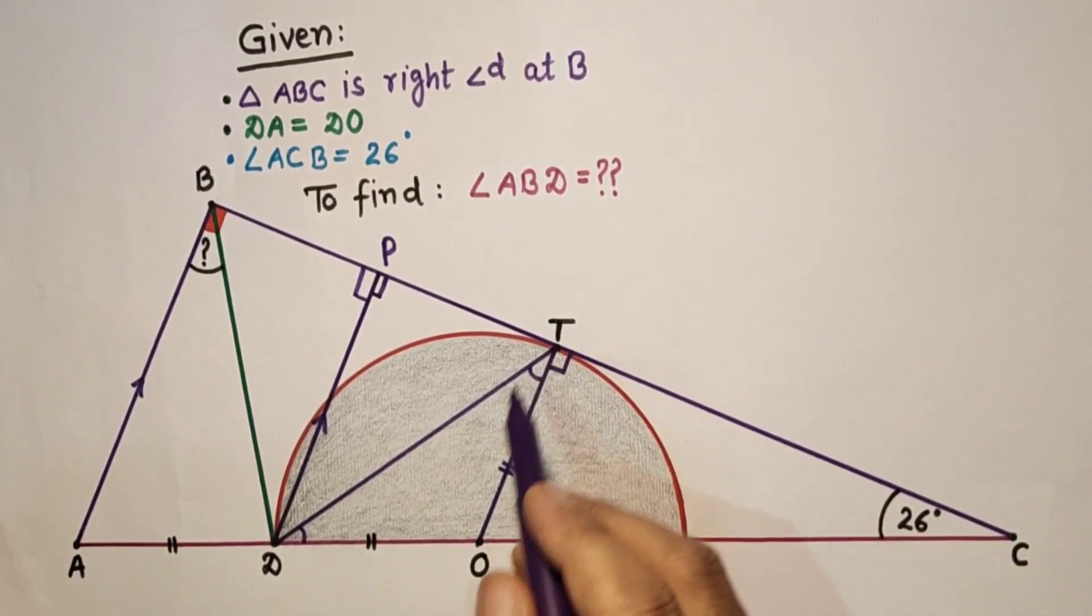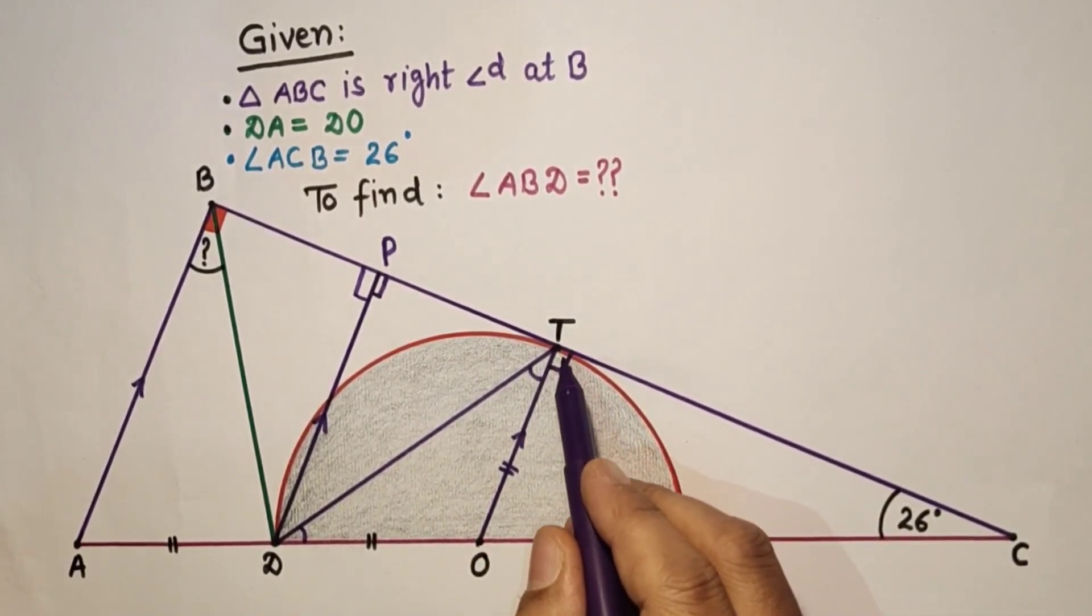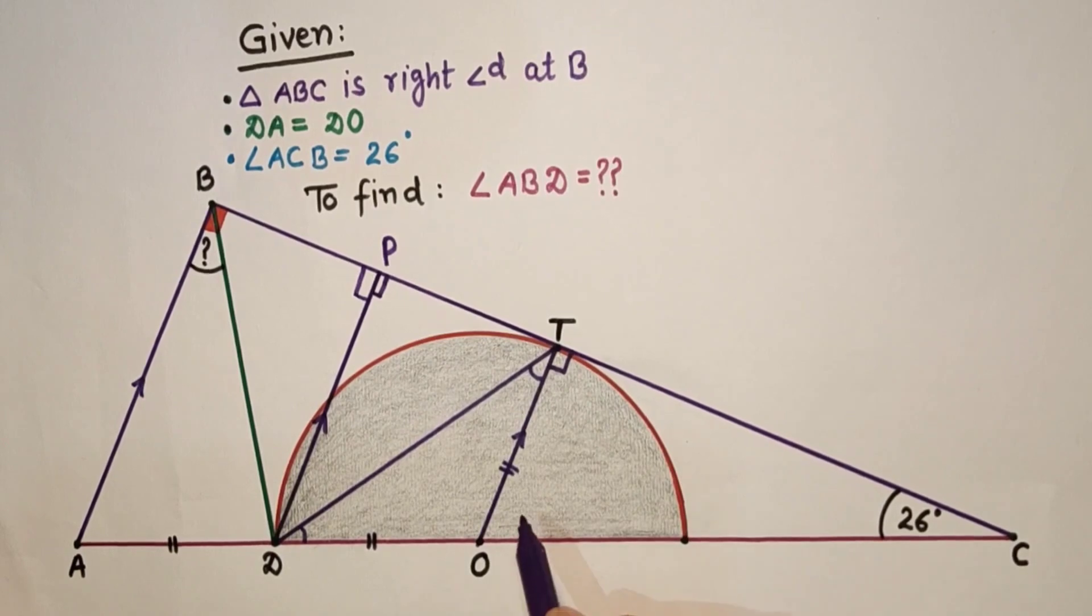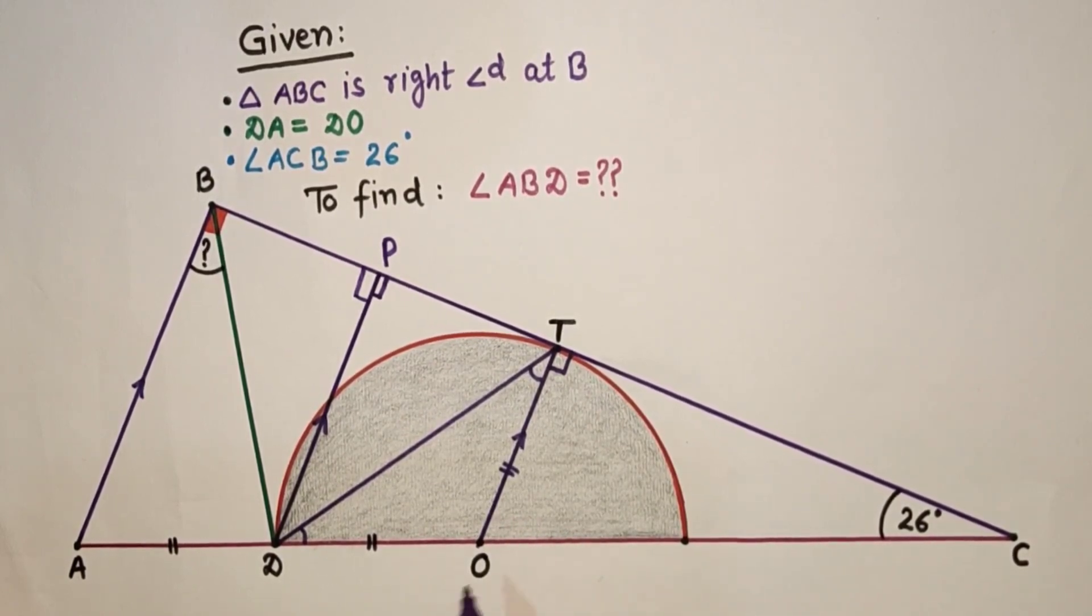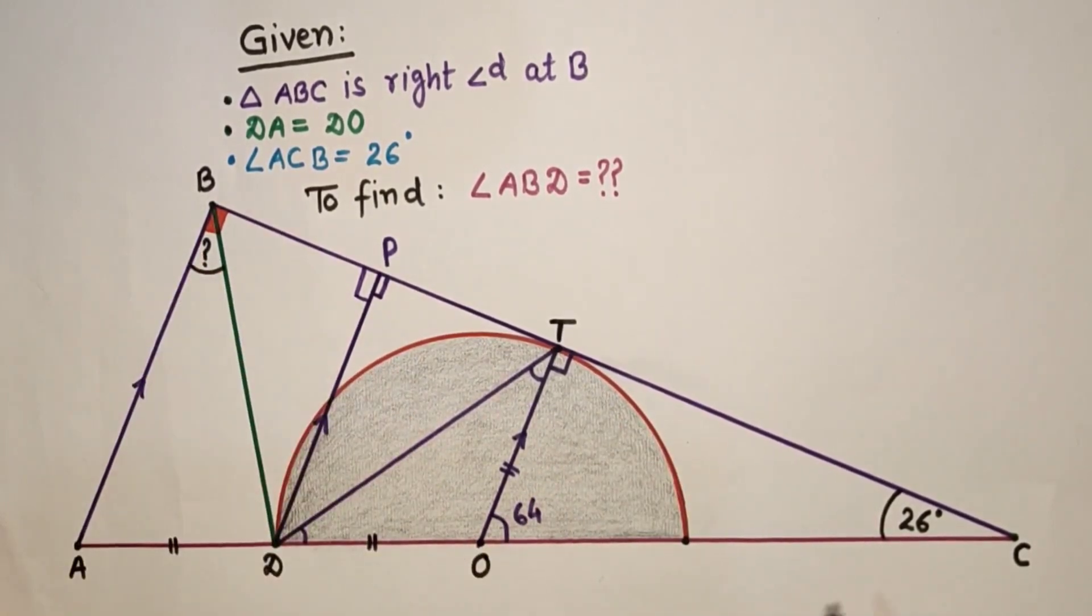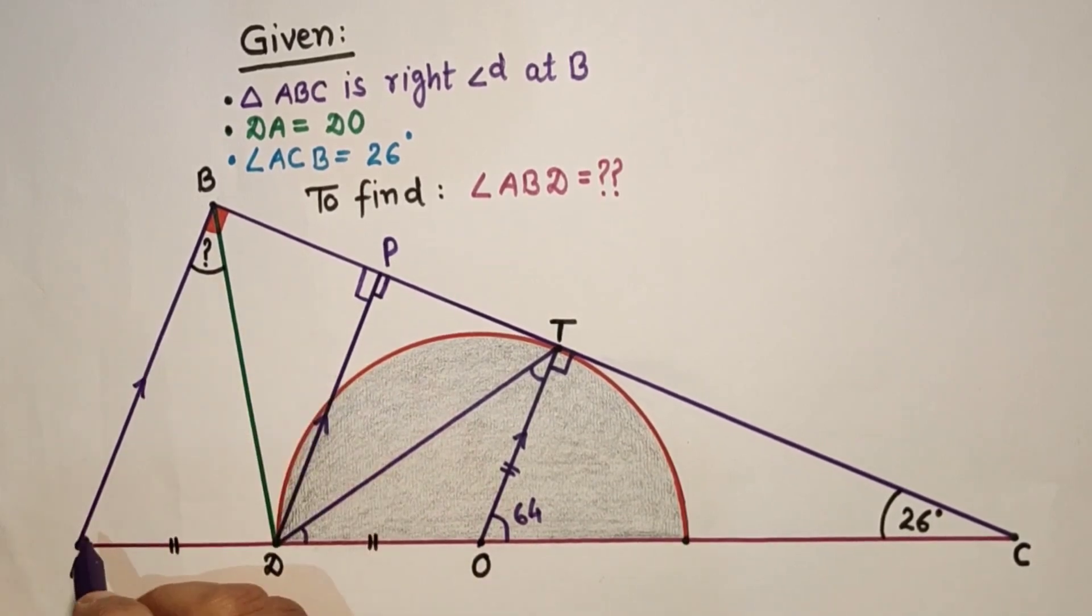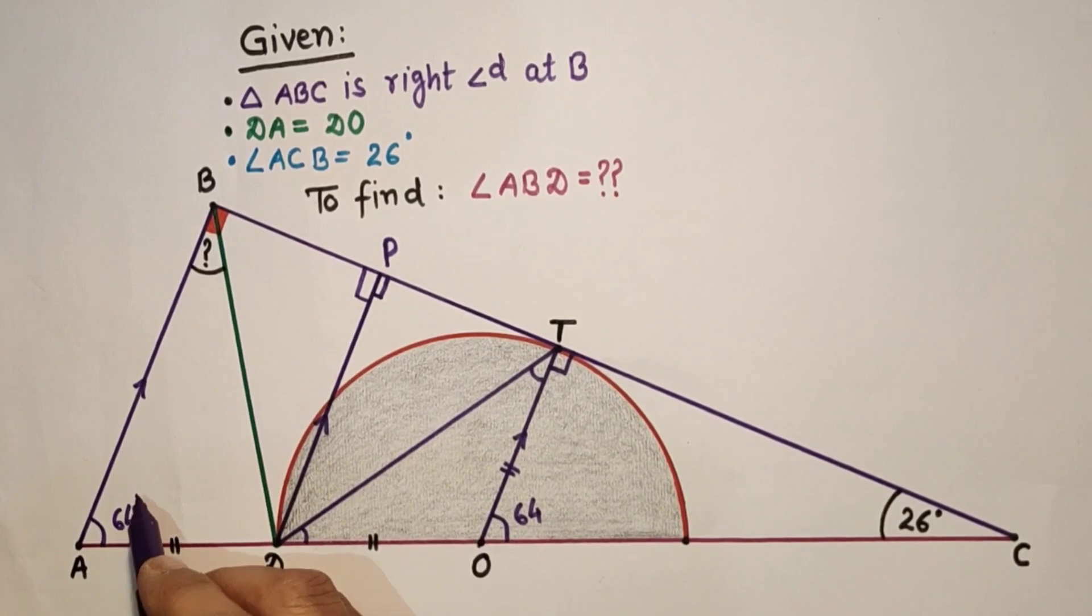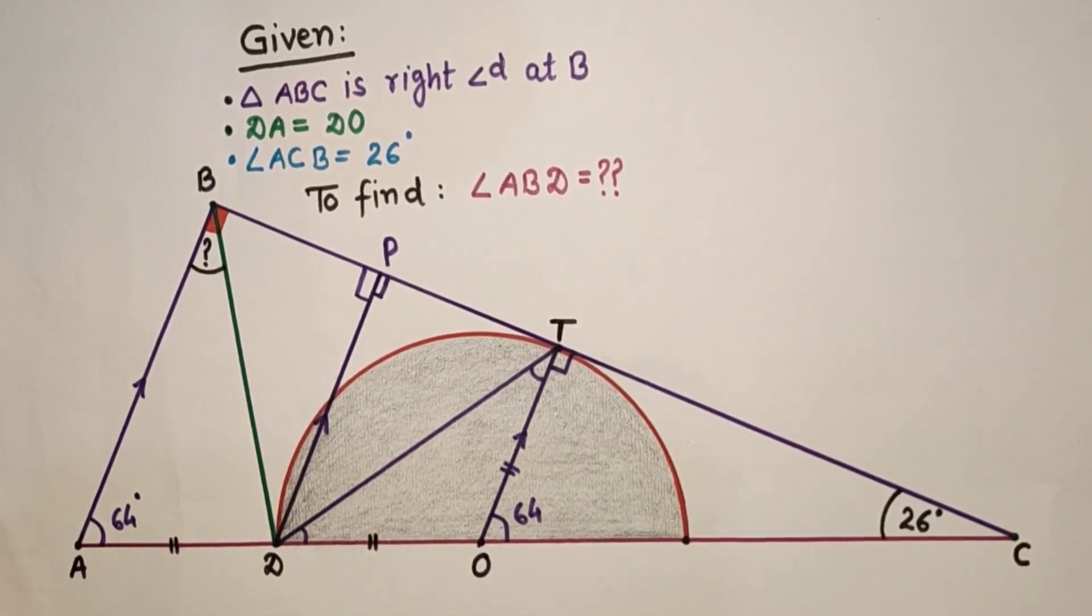In this triangle CTO, this is 90, this is 26, so this angle is 90 minus 26, and that is equal to 64. TO is parallel to BA. This is 26, this is 90. These two are corresponding angles, so this is 64. We can write 64, 64.